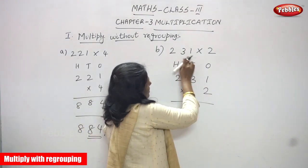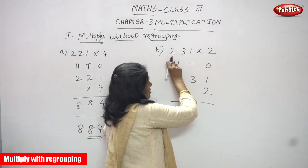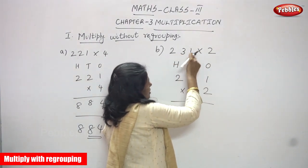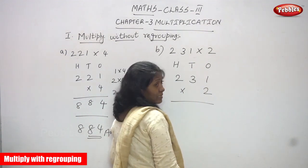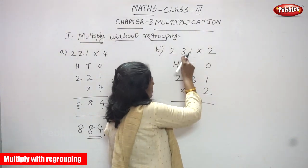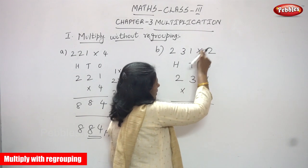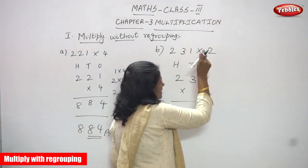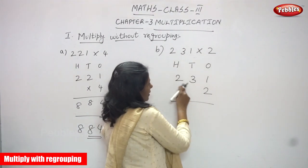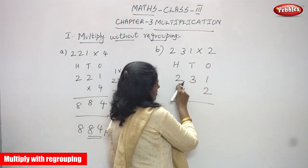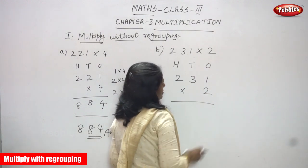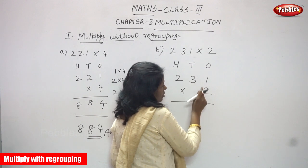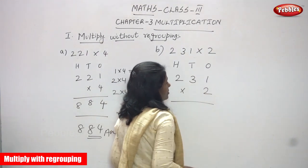This is a three digit number multiplied by a single digit number. Two hundred and thirty one is going to be multiplied by two. So two hundreds, three tens, and one ones is going to be multiplied by two, which is a single digit number.